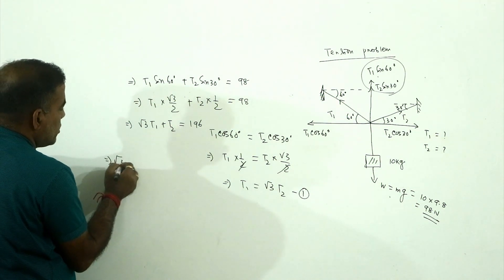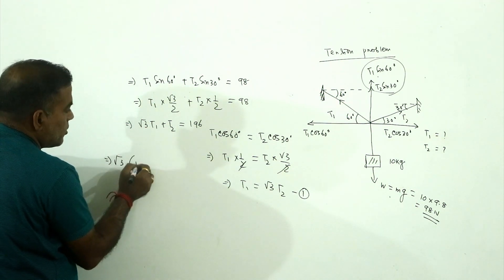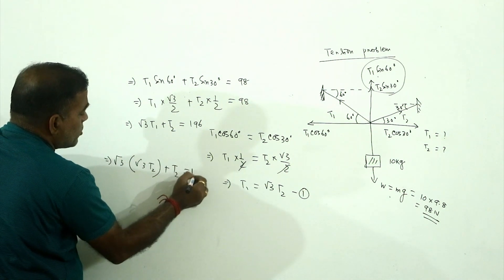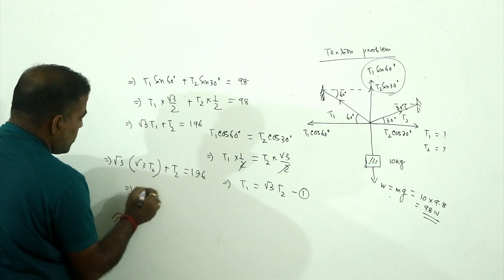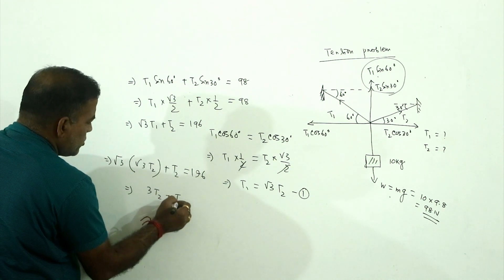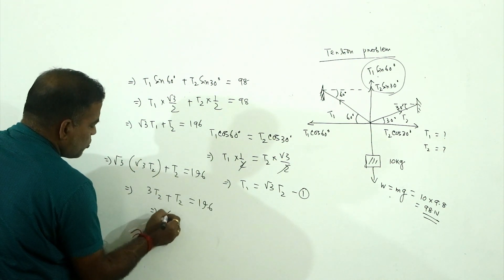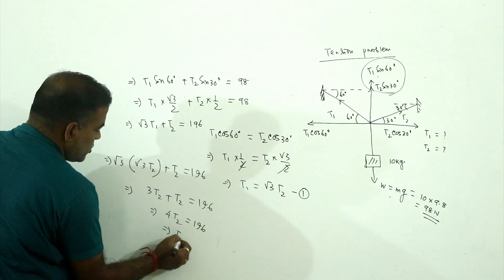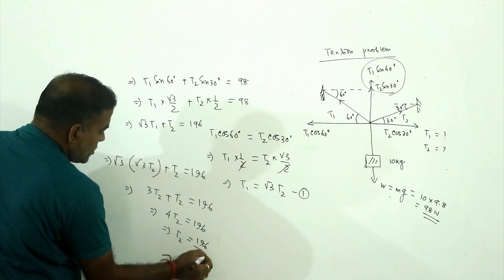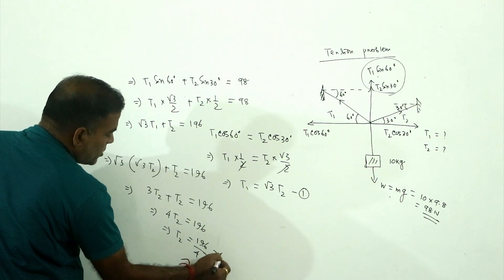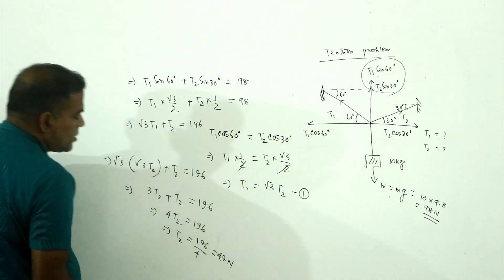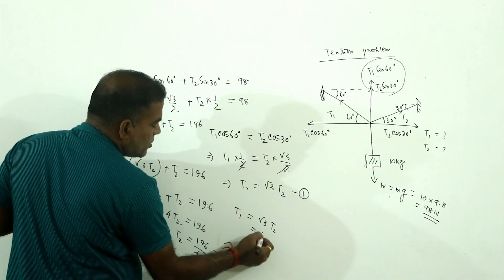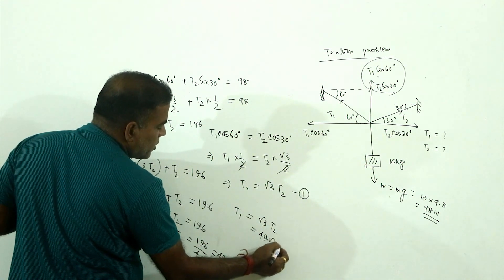Substituting T1 = root 3 T2 into the vertical equation: root 3 × (root 3 T2) plus T2 = 196, so 3T2 plus T2 = 196, giving 4T2 = 196. Therefore T2 = 49 Newton, and T1 = root 3 × 49 = 49 root 3 Newton.